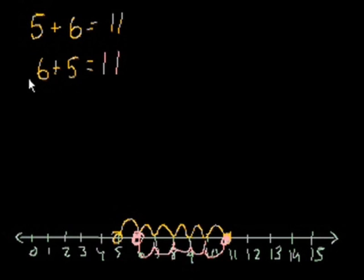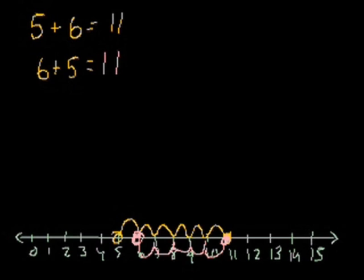That makes sense. If I have 5 avocados and you give me 6, I'm going to have 11. If I have 6 avocados and you give me 5, I'm going to have 11 either way. Since this number line is so nice, I want to do a few more problems using it.